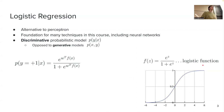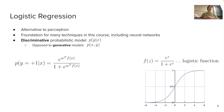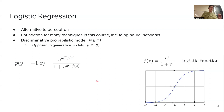The shape of this logistic function matters. It has a value of 0.5 when Z equals zero, approaches zero as Z goes to negative infinity, and approaches one as Z goes to positive infinity. The key intuition: if our dot product is very large, the probability is close to one; if very small, the probability is close to zero.